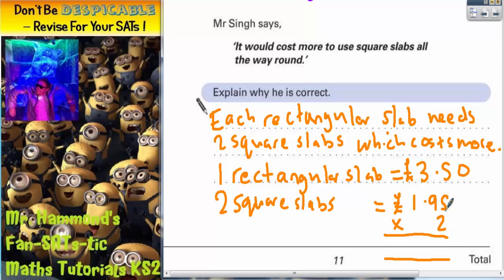So two 5s are 10, carry the 1. Two 9s are 18, plus that 1 is 19, carry the 1 again. Two 1s are 2, plus that 1 is 3. Put the decimal point in, put the pound sign in. So two square slabs are actually £3.90, which is more.